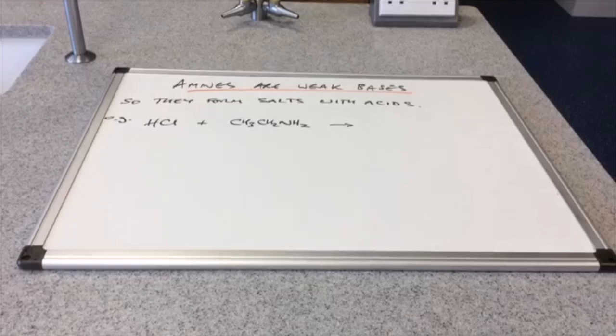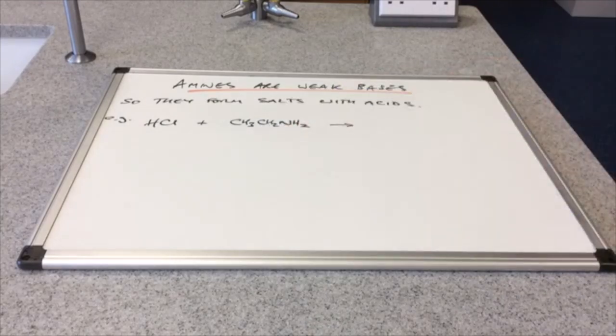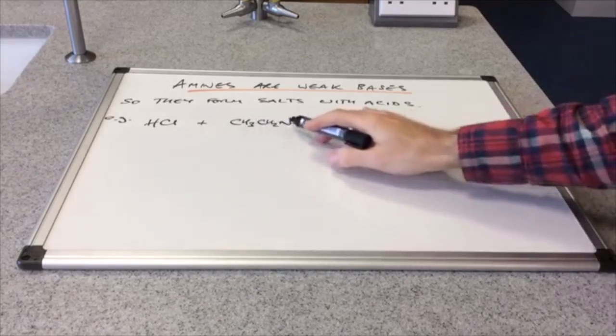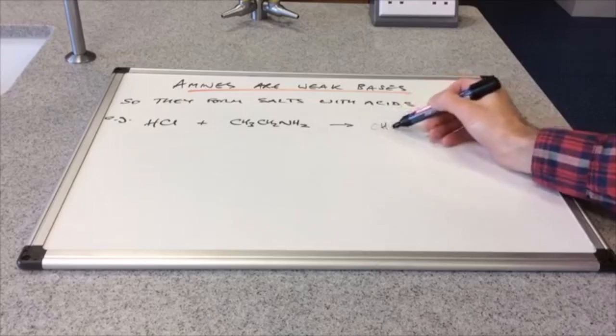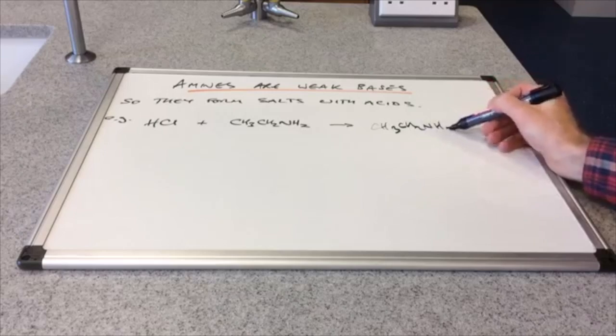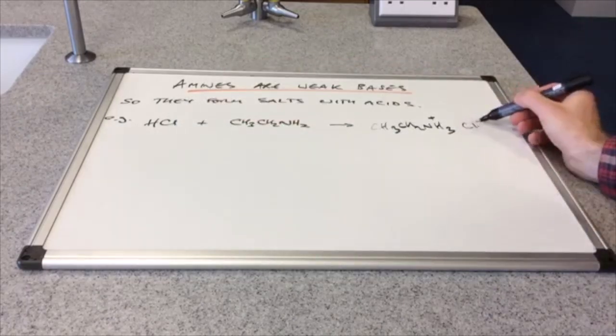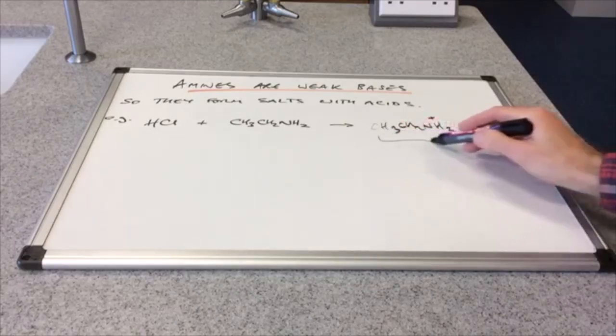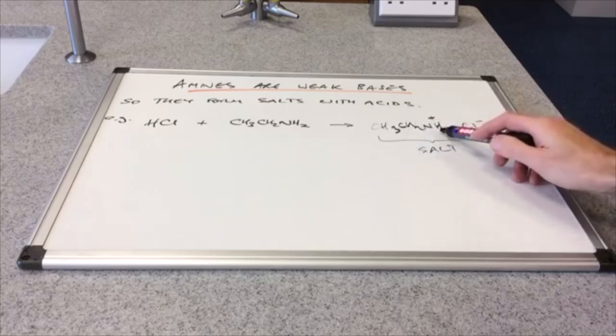We'll take this a step further now and react an amine with an acid. So we've got hydrochloric acid on the board there, and this is ethyl amine, two carbons. We're going to get a salt because amines are bases, weak bases. Bases react with acids to form salts. So the amine, the lone pair on the nitrogen, is going to accept this H+. It's going to form the corresponding ammonium ion, which is going to be CH3CH2NH3+. What's left of the acid will be a chloride ion. So we'll form this salt here. This is going to be called ethyl ammonium chloride.